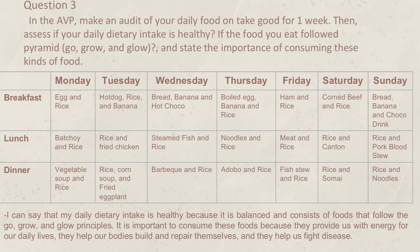On Wednesday, breakfast was bread, banana, and hot chocolate, lunch was steamed fish and rice, and dinner was barbecue and rice. On Thursday, breakfast was boiled egg, banana, and rice, lunch was noodles and rice, and dinner was adobo and rice. On Friday, breakfast was ham and rice, lunch was meat and rice, and dinner was fish stew and rice. On Saturday, breakfast was corned beef and rice, lunch was rice and canton, and dinner was rice and siomai. On Sunday, breakfast was bread, banana, and choco, lunch was rice and pork blood stew, and dinner was rice and noodles.